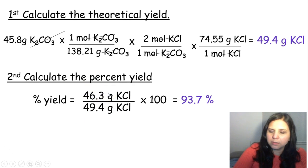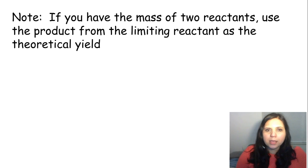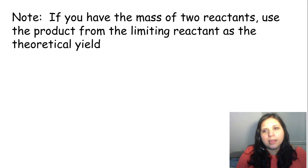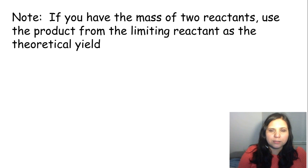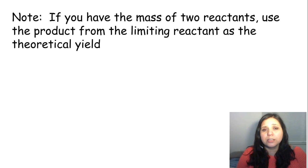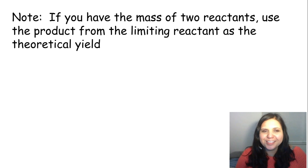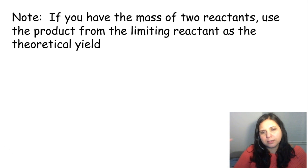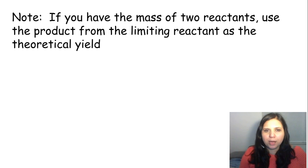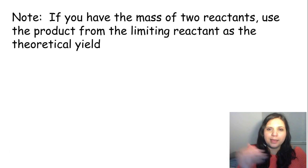Note: if you have masses of two reactants and need to find the theoretical yield, you use the limiting reactant. In limiting reactant problems, you calculate the mass of product from each reactant and choose the smaller number — that's the theoretical yield, given by the limiting reactant.